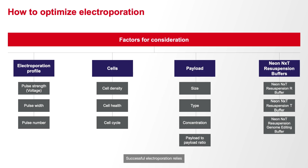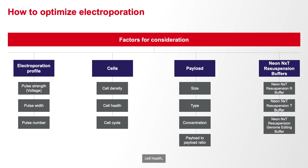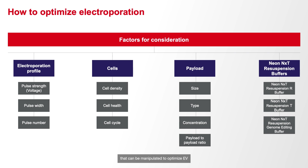Successful electroporation relies on a delicate balance of multiple factors, and a thoughtful optimization of pulse voltage, pulse width, pulse number, cell density, cell health, and cell cycle, along with payload characteristics and buffer types, is paramount. All variables that can be manipulated to optimize EP performance are important to consider.